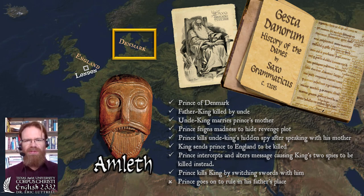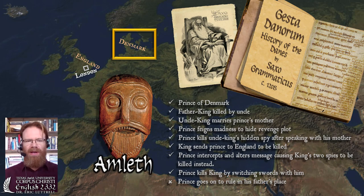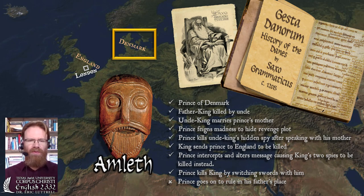Amleth eventually kills the king in a sword fight in which he starts off with a sword that's been rendered useless, then switches swords with his opponent before killing him. The major difference in the plot is that Amleth goes on to rule in his father's place over Denmark, then has adventures in England where he marries the queen of Scotland and goes to war with the king of England, before being eventually killed in another battle.